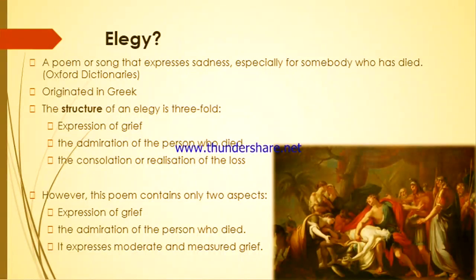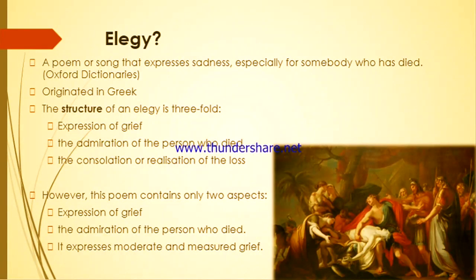Now I will return to our discussion about an elegy. An elegy is a poem or song that expresses sadness, especially for someone who has died. The elegy originated in Greek. The structure of an elegy is threefold: expression of grief, admiration of the person who died, and consolation or realization of the loss. However, this poem contains only two aspects: the expression of grief and the admiration of the person who died. When you read the elegy, you will understand that Dryden's expression of grief is moderate and measured — meaning controlled.